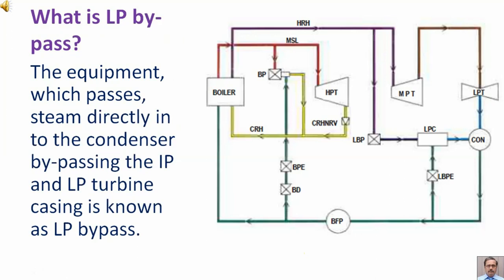What is LP bypass? The equipment which passes steam directly into the condenser by passing the IP and LP turbine casing is known as LP bypass.